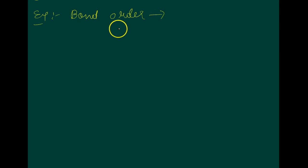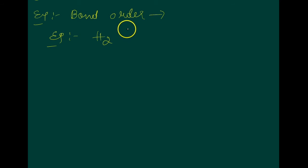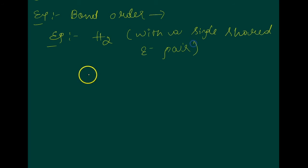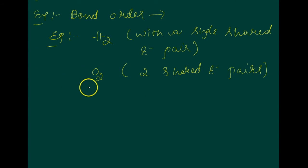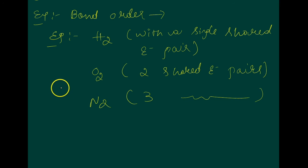For example, consider H2 which has a single shared electron pair, so the bond order is one. O2 has two shared electron pairs, so bond order is two. N2 has three shared electron pairs, so bond order is three.